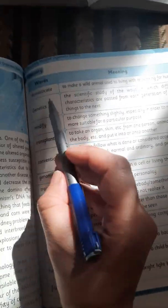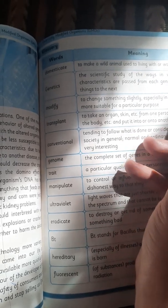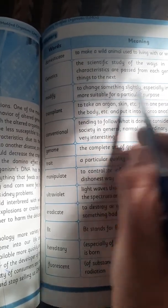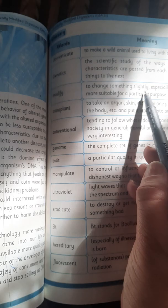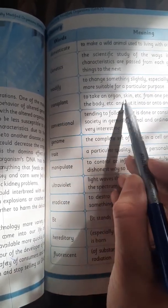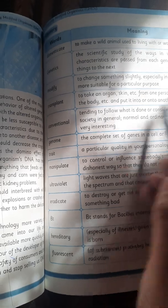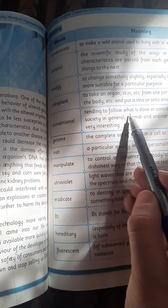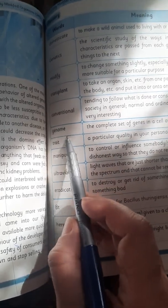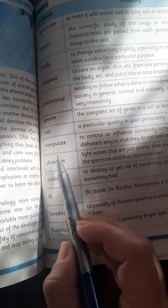Now there are a lot of difficult words in it. Domesticate: to make a wild animal used to living with or working for humans. Genetics: the scientific study of the ways in which different characteristics are passed from generation of living things to the next. Modify: to change something slightly, especially in order to make it more suitable for a particular purpose. Transplant: to take an organ, skin, etc. from one person, animal, part of the body, etc. and put it into or onto another. Conventional: tending to follow what is done or considered acceptable by society in general, normal and ordinary. Genome: the complete set of genes in a cell or living thing. Trait: a particular quality in your personality. Manipulate: to control or influence somebody or something, often in a dishonest way.